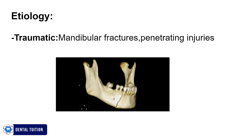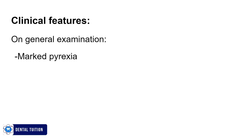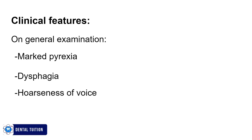Moving towards clinical features — on general examination, marked pyrexia is seen in the patient. Pyrexia is the high fever which occurs due to increased bacterial load. Another feature includes dysphagia, meaning the patient has difficulty swallowing due to elevation of the tongue, which is caused by accumulation of pus after spread of infection to the sublingual space. There is also hoarseness of voice due to edema in the pharyngeal wall, soft palate, and elevation of tongue, as well as drooling of saliva from the mouth.